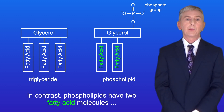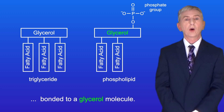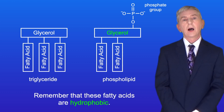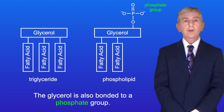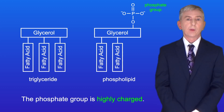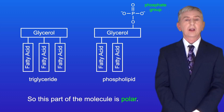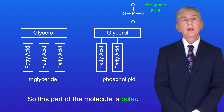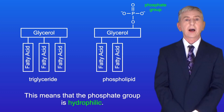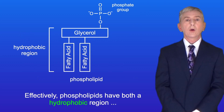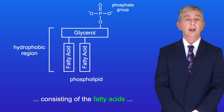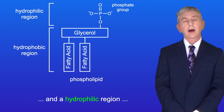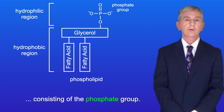In contrast, phospholipids have got two fatty acid molecules bonded to a glycerol molecule, and these fatty acids are hydrophobic. The glycerol is also bonded to a phosphate group. The phosphate group is highly charged so this part of the molecule is polar, which means that the phosphate group is hydrophilic. So effectively phospholipids have both a hydrophobic region consisting of the fatty acids and a hydrophilic region consisting of the phosphate group.